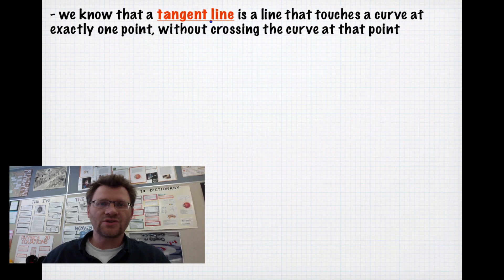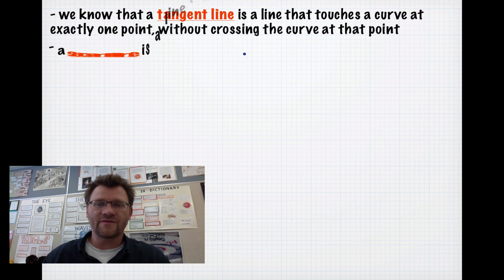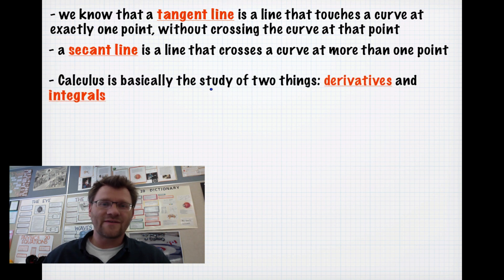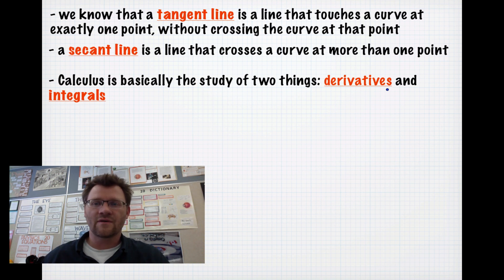A tangent line is a line that touches a curve at exactly one point without crossing the curve at that point — it just touches it. A secant line is a line that crosses a curve at more than one point. With this in mind, we're going to develop the definition of what the derivative actually is. Calculus is basically the study of two things: derivatives and integrals. We'll spend most of the rest of this course on derivatives, then touch on integrals at the very end.